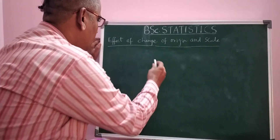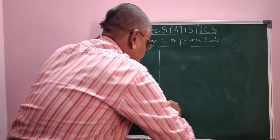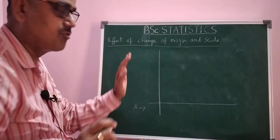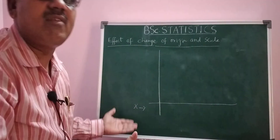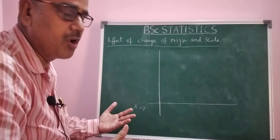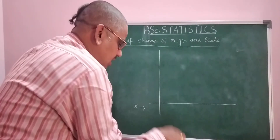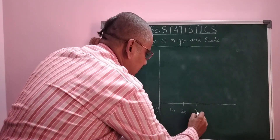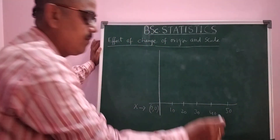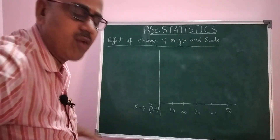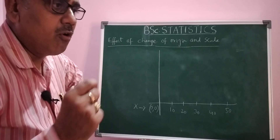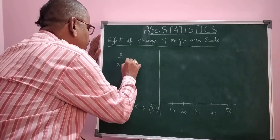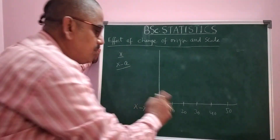If you consider the observations of x, I am considering the values: 10, 20, 30, 40, and 50. Now, if you subtract a value from all the values of x — that is x minus a — let a be equal to 30.